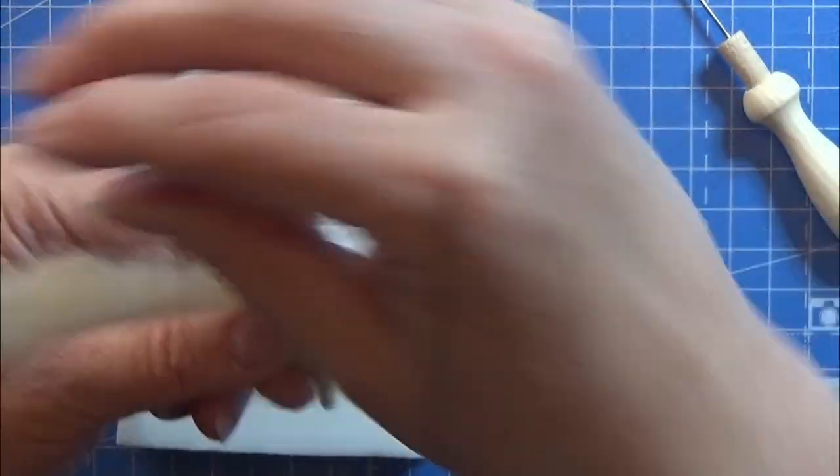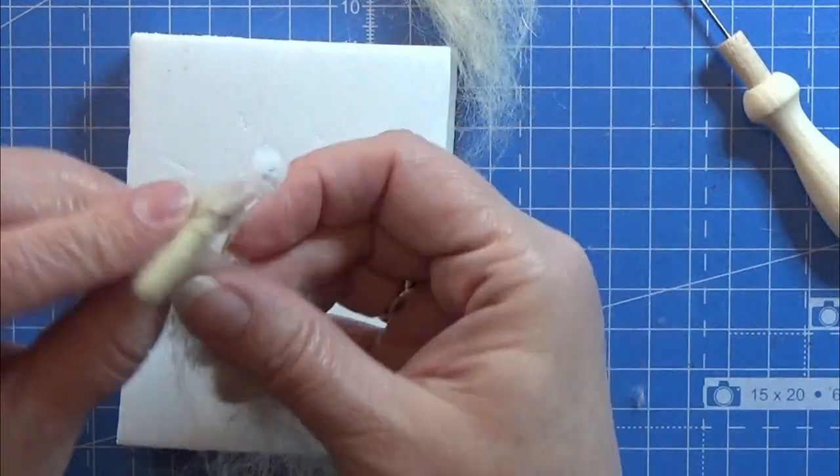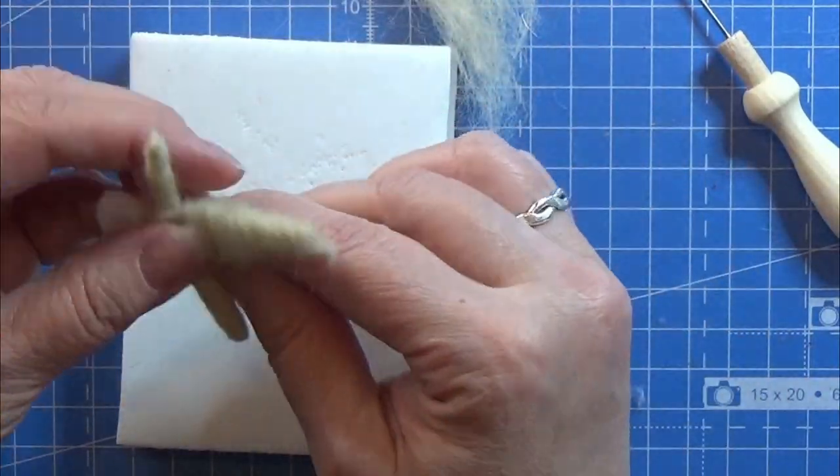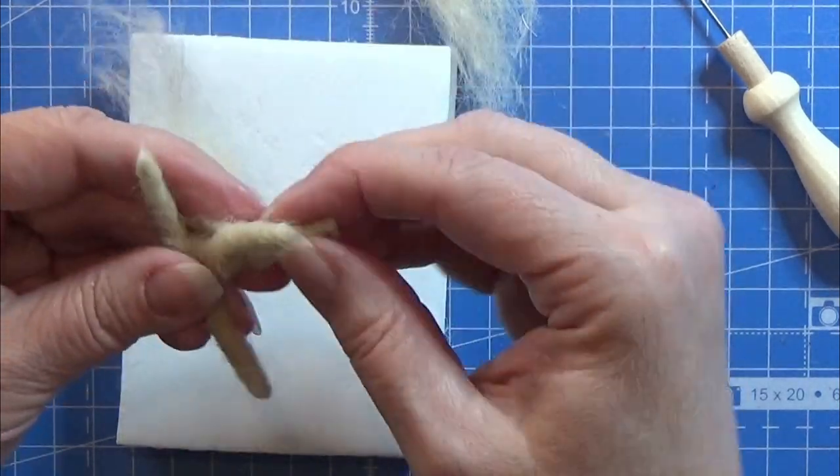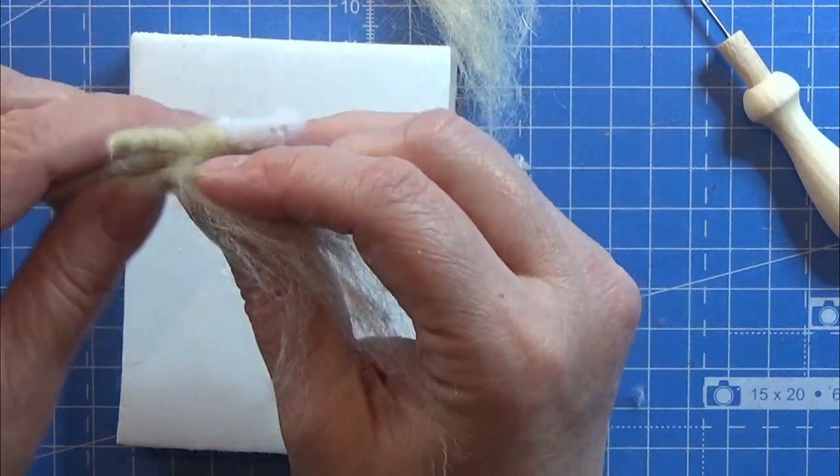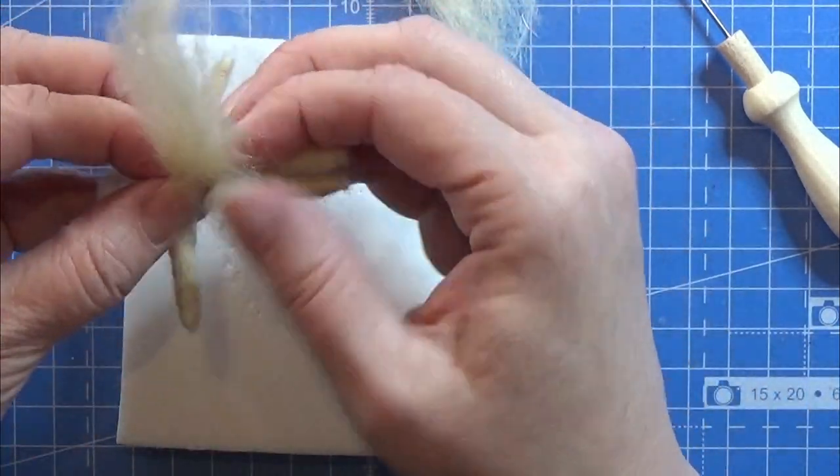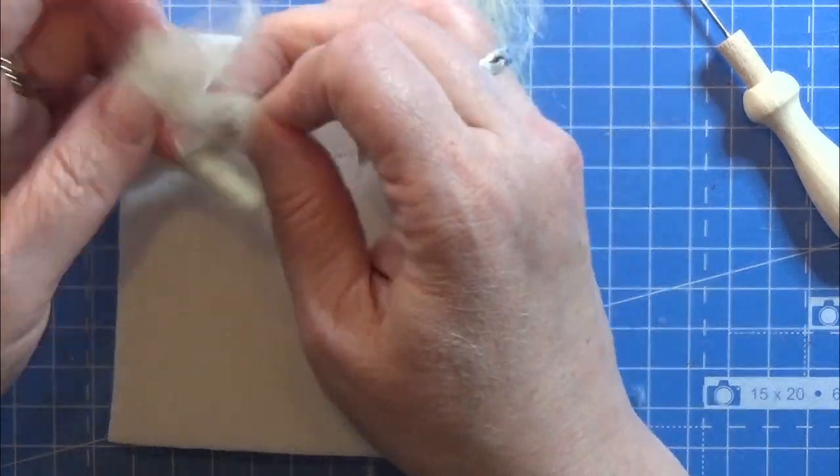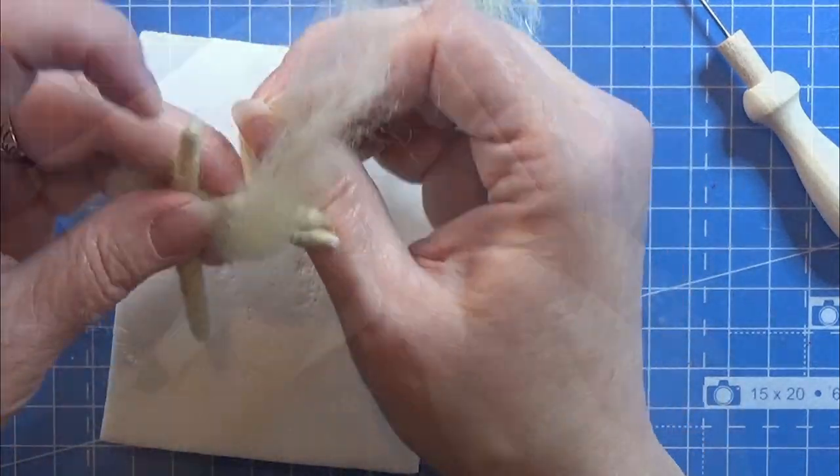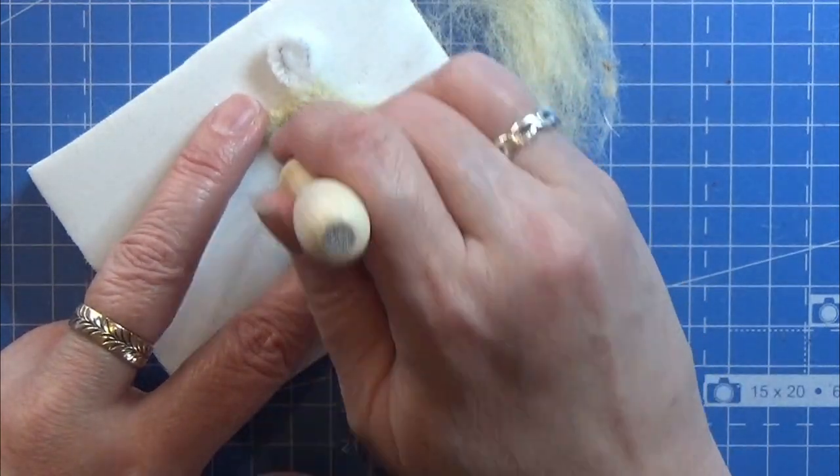I take a little more wool, and I'm wrapping this around the body and trying to get it as smooth and as pulled in as I can, so it's not too loose to start with, because that will make the work even longer.